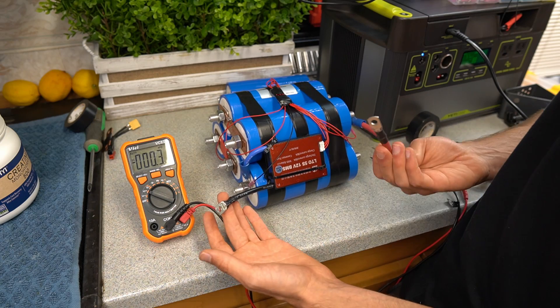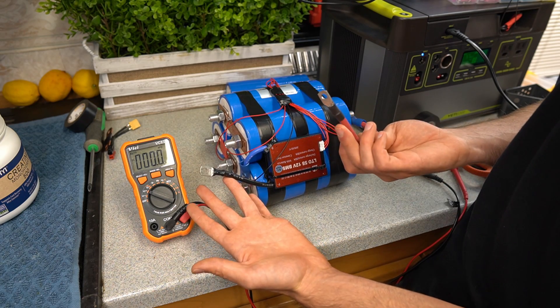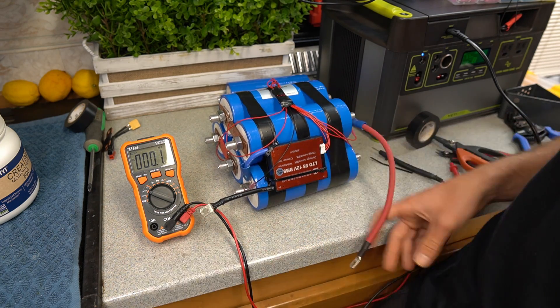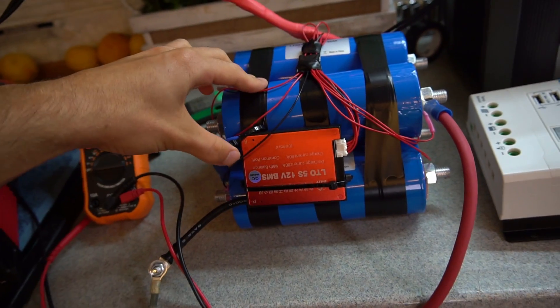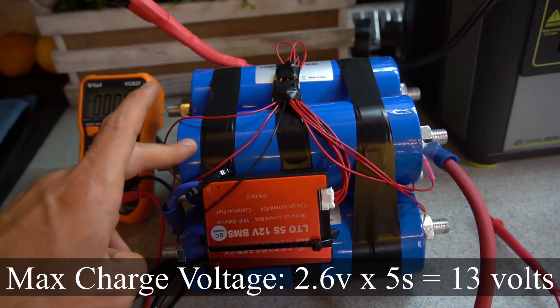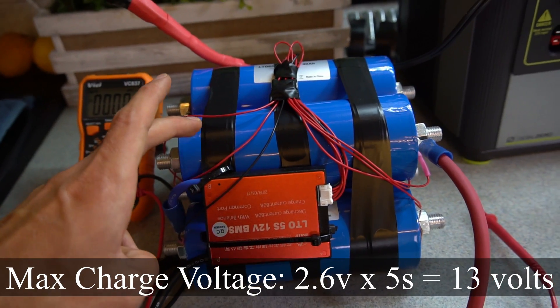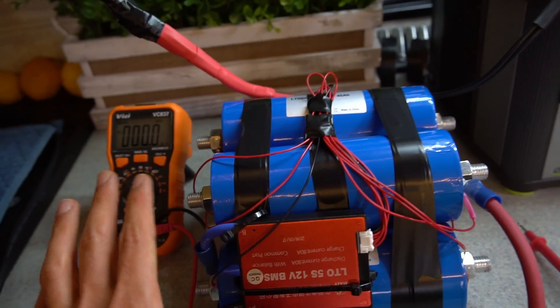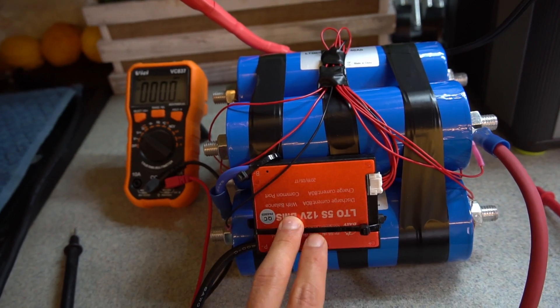We're just going to strap them down with some zip ties. But that's pretty much it. Now we have a negative and a positive and I can connect it to an inverter or a solar charge controller, whatever I want really. Now we're going to charge this up and see what happens when we give it an over voltage situation.